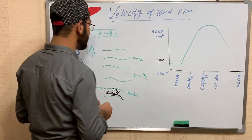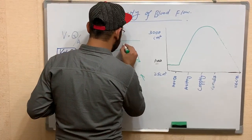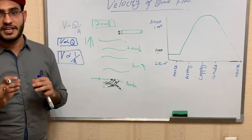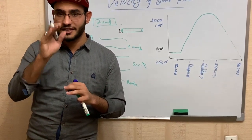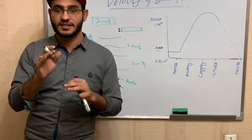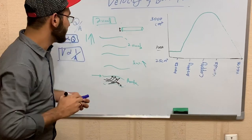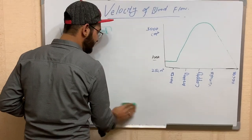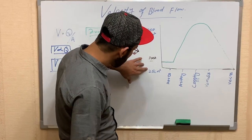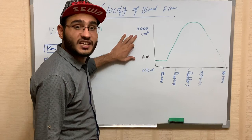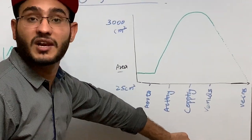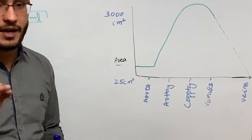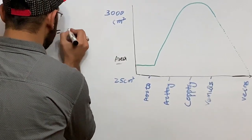The cross-sectional area can be illustrated with a tube. As the cross-sectional area increases, the velocity decreases. For a graphical representation, the y-axis shows cross-sectional area and the x-axis shows the blood vessel. In the aorta, the velocity is high. The formula is: V = Q / A, where V is velocity and A is cross-sectional area.